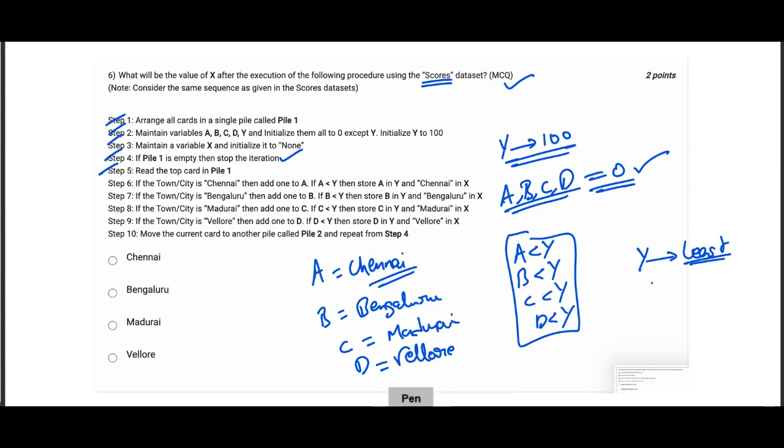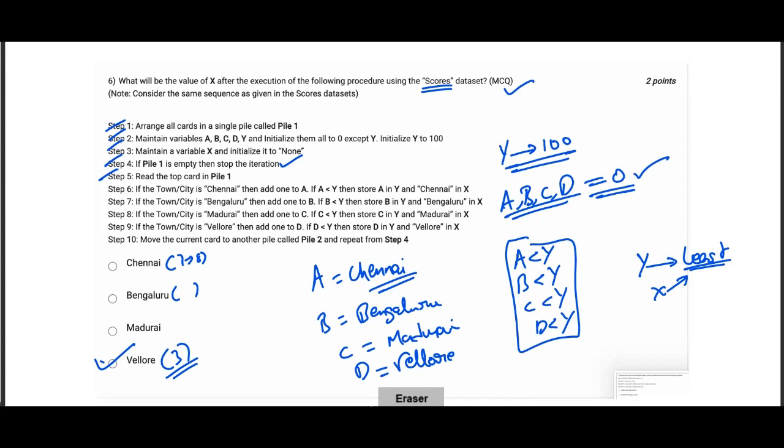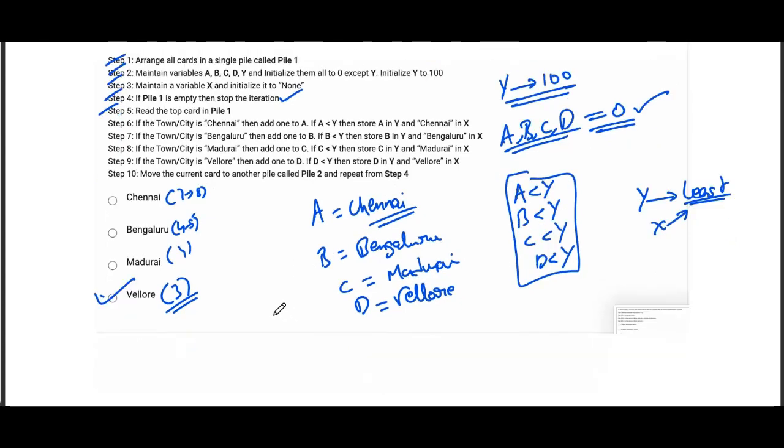But what does Y store? Y stores the city that has occurred for the least number of times and X stores the city that occurred very less number of times. Out of these four cities, after verifying with the data provided to us in your dashboard, the answer was found out to be Vellore, as it got repeated only for three times, whereas Chennai was repeated around seven to eight times, Bangalore was for four times, and Madurai is for four. Therefore Vellore is the correct answer. Option D is the right answer for question number six.